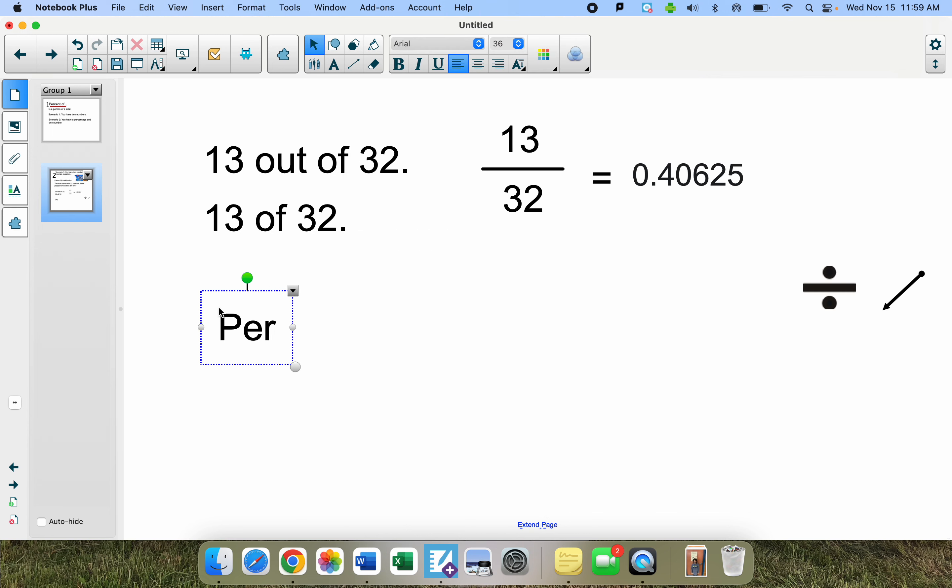We know that the word per cent, if I spell it like this, actually means out of 100. If you live to be a century, you're 100 years old. If you have 100 cents or a dollar, that's 100. So there's 100 of them in a dollar. The word has been mashed together to equal percent. Percent actually means out of 100.